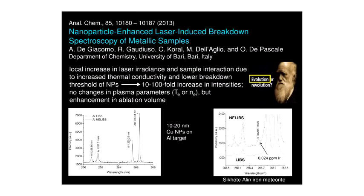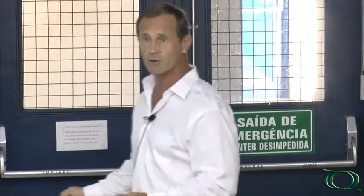Research has explored using nanoparticles — specifically decorating samples with copper nanoparticles on the surface before doing LIBS. Because of a local increase in laser irradiance during the ablation event, the increased thermoconductivity and lower breakdown threshold of nanoparticles increased the emission intensity from the substrate by factors of 10 to 100-fold. Here we see an aluminum substrate without nanoparticles, and here after nanoparticle decoration. Applied to a real sample — a Sikodi-Ellen iron meteorite that fell to Russia in 1946 — a signal for iridium present at 24 parts per trillion could actually be resolved above baseline noise after nanoparticle decoration, whereas without the nanoparticles there was no signal at all.